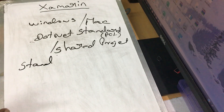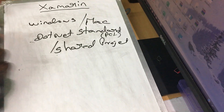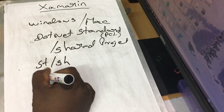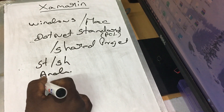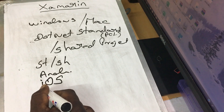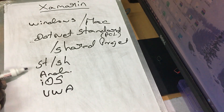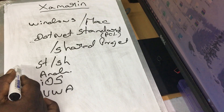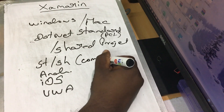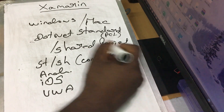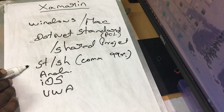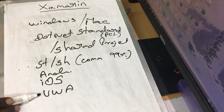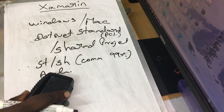Now you can create a normal project in Xamarin. You can create a .NET Standard or Shared project, then an Android project, then an iOS project, and then a UWP project. If you want to write common code, you put it in the common project — about 99% of the code can be shared. You can also define iOS and UWP separately.